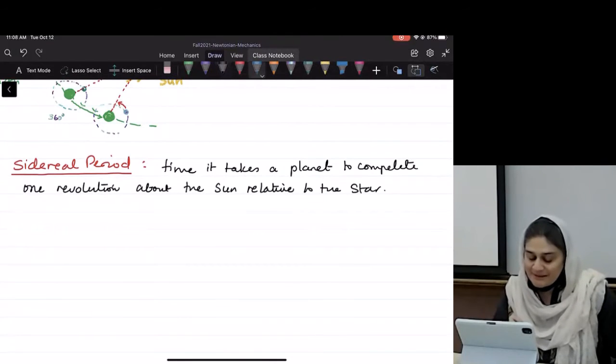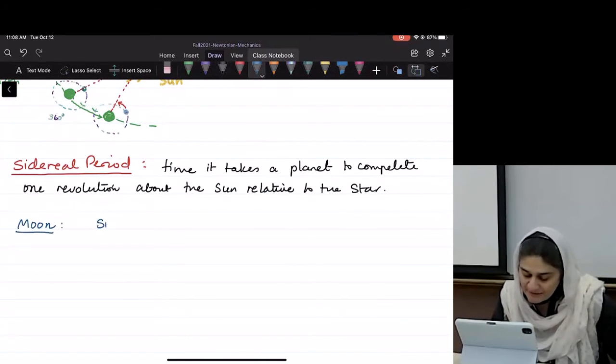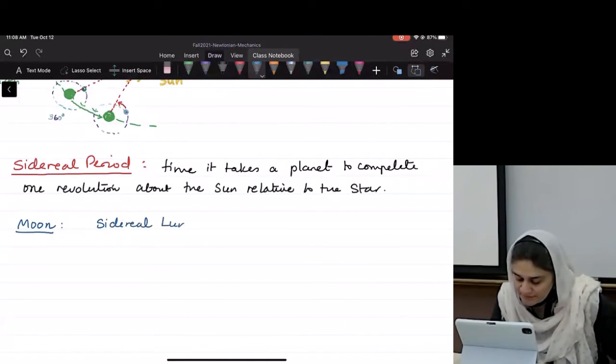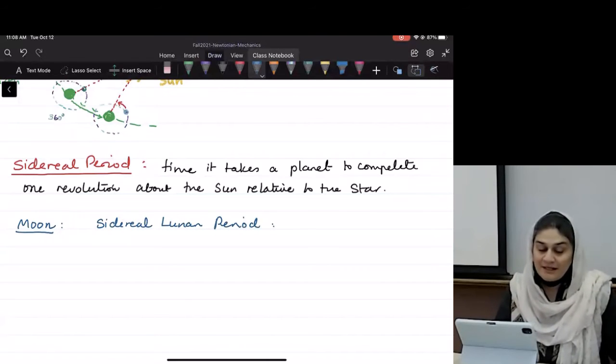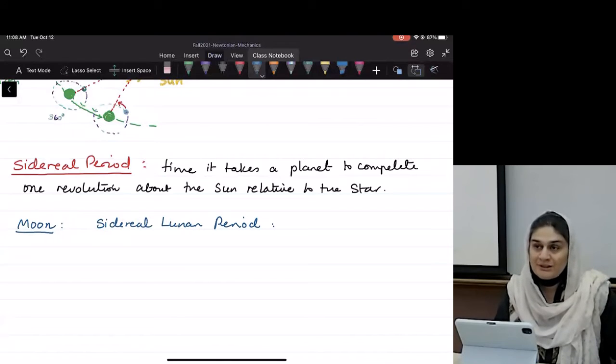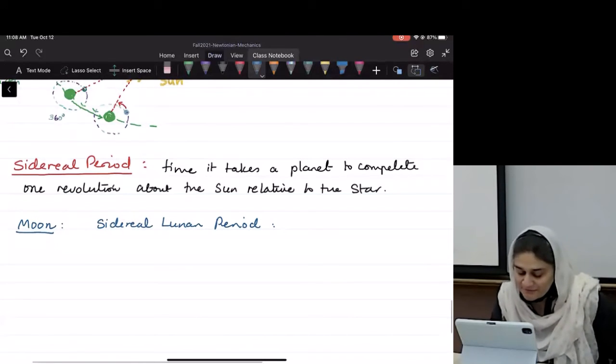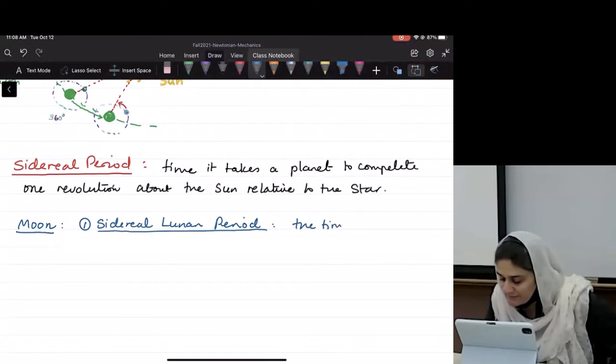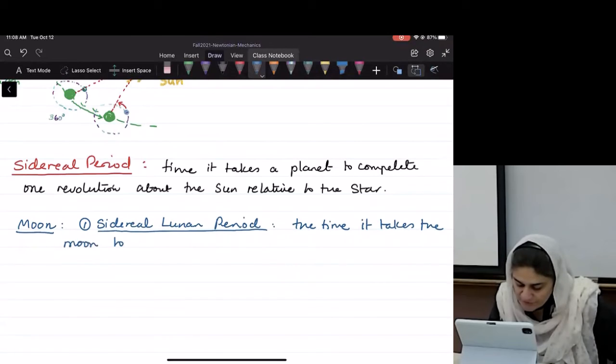So now let's talk about the sidereal period of the moon. For the moon, the sidereal lunar period is the time it takes the moon to complete one revolution around the earth with stars as a background. So let's write this down. The time it takes the moon to complete one revolution around the earth.